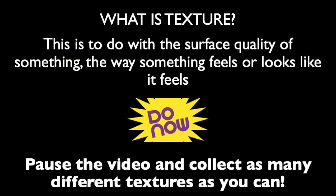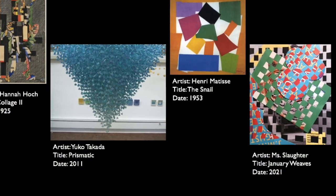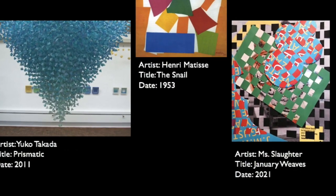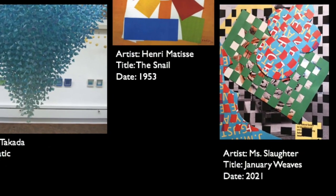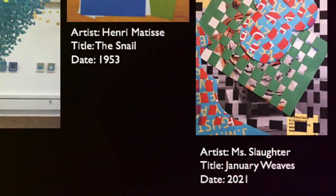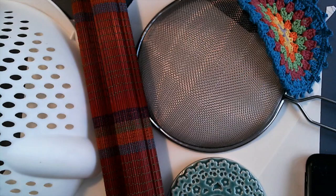Texture is to do with the surface quality of something, the way something feels or looks like it feels. Pause the video and go and collect as many different textures as you can. Do you remember how we explored texture with our paper weaving? Now we're going to explore it using crayon rubbing instead. I had a good rummage around my house and these are the different things I found.